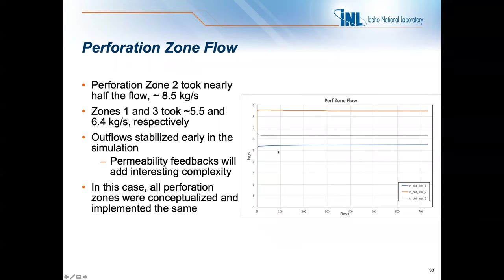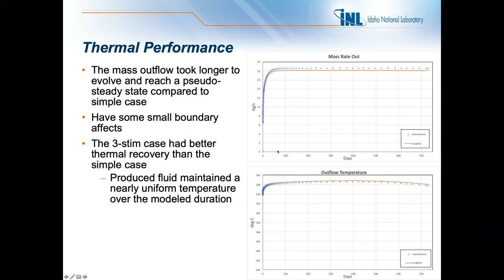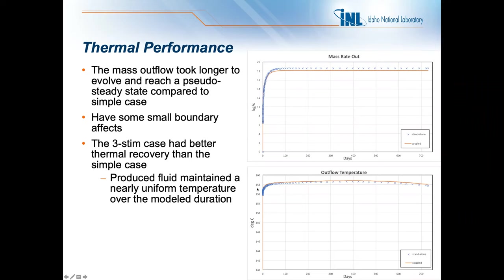Thermal performance was really surprising. The mass outflow didn't show the same early-time spike from the Peaceman borehole because much of that borehole was in really low-permeability material — we saw much slower evolution for outflow to reach near-steady state. The three-stem case had much better thermal recovery than the simple case. In the simple case we started at about 158 degrees C and ended around 152 after two years. In the three-stem case, due to more tortuous flow paths, we ended up with a more uniform production temperature over a longer period of time.